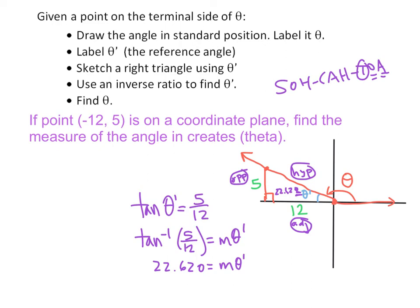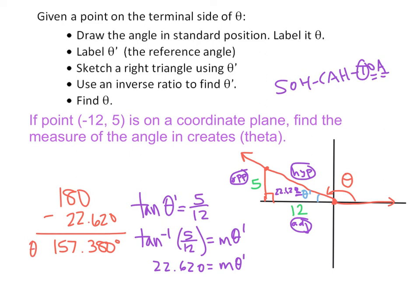Now — this time, unlike the previous example where we subtracted theta prime from 360, we need to subtract theta prime from 180, because the angle is shy of 180 degrees, not 360. So: 180 minus 22.620 degrees gives us 157.380 degrees — that is the measure of theta.